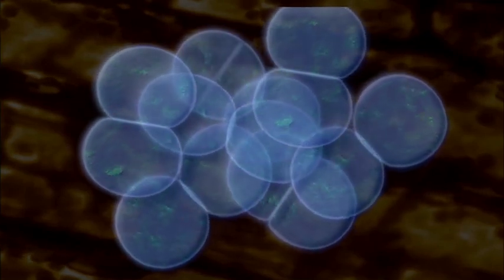As that cell divides into two cells, and then four, eight, sixteen, and so on, each and every one of those cells has within its own nucleus an exact, complete copy of those instructions.